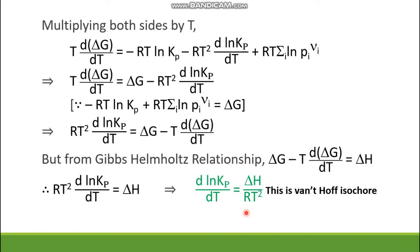The Van't Hoff isochore can be described as: the differentiation of the natural log of the equilibrium constant in terms of pressure with respect to temperature is equal to ΔH / RT², where ΔH is the enthalpy change, R is the universal gas constant, and T is the temperature.